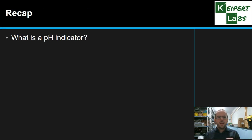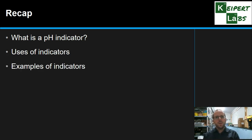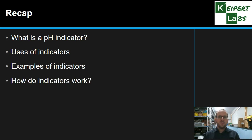So we've identified what a pH indicator is — a compound that changes colour with a change in acidity. We've seen that indicators have a range of different uses in everyday life and in the lab. We looked at examples of common indicators and the science behind the equilibrium that explains how they work. Thanks very much for watching. Don't forget to like and subscribe.